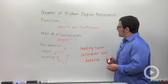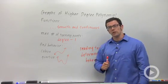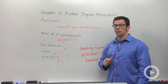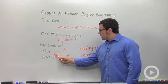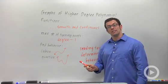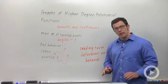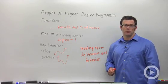So knowing these things, the graphs are smooth and continuous, the max number of turning points is the degree of the polynomial minus one. Remembering that the ends of a cubic go in opposite directions, the ends of a quartic go in the same direction, and that the leading term determines end behavior, that's enough to get us started graphing polynomials.